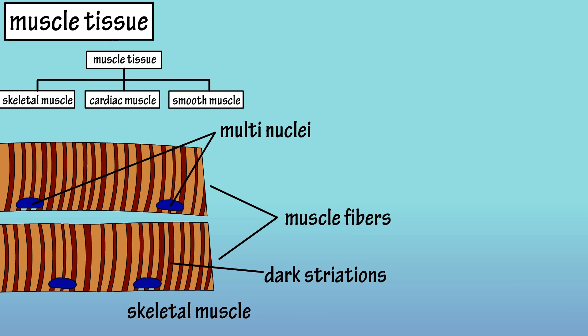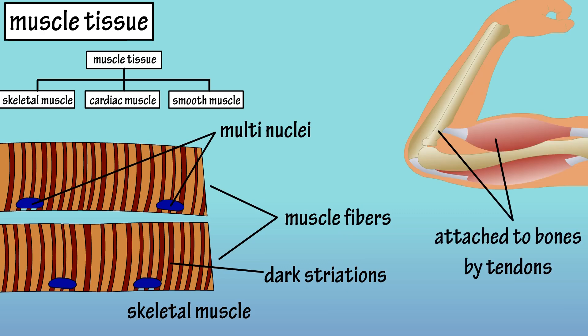Skeletal muscle tissue is comprised of long cylindrical cells called skeletal muscle fibers that are parallel to one another and are unbranched. These fibers are multinucleated, meaning that they have many nuclei and have alternating light and dark bands called striations. Skeletal muscle is attached to bones and provides for voluntary skeletal movement of the body.